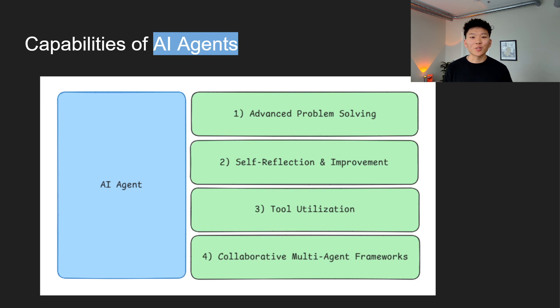Finally, we have collaborative multi-agent frameworks. Like I touched on earlier, agents can speak to each other, which is super cool. One might handle planning, one might handle critiques, one might offer feedback, and this iterative loop where agents can collaborate and talk to each other dramatically enhances their performance.